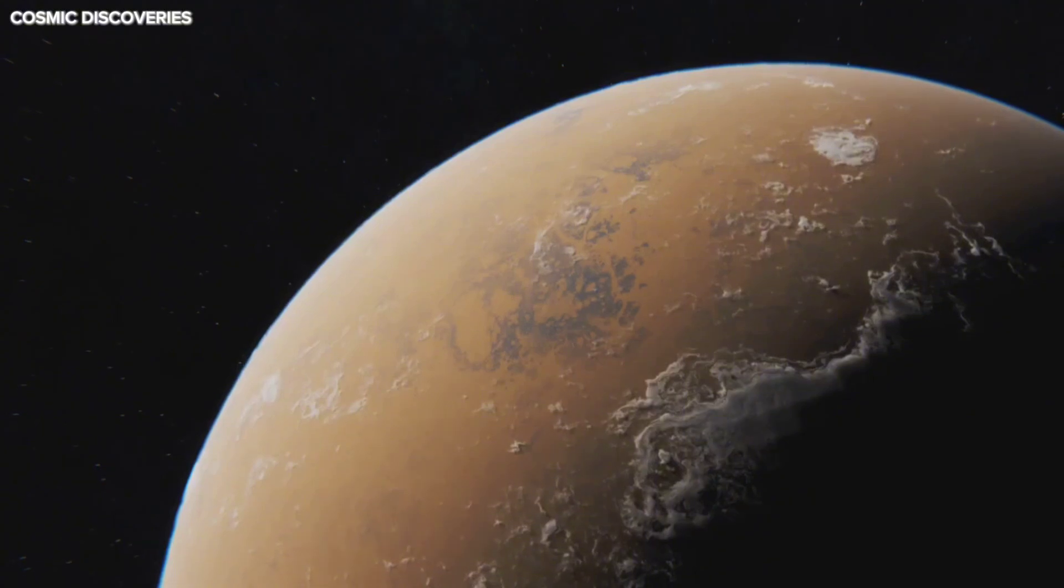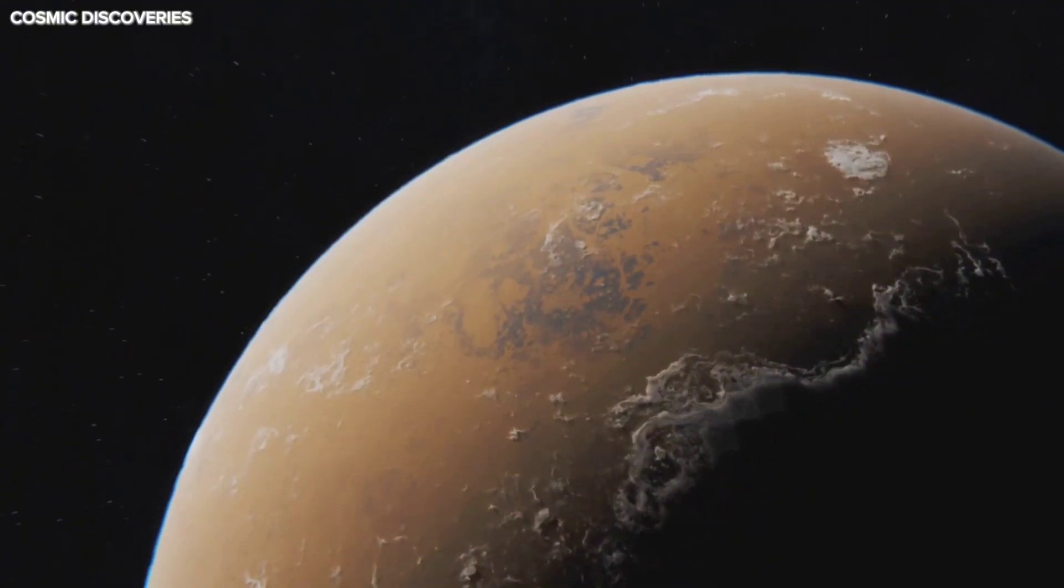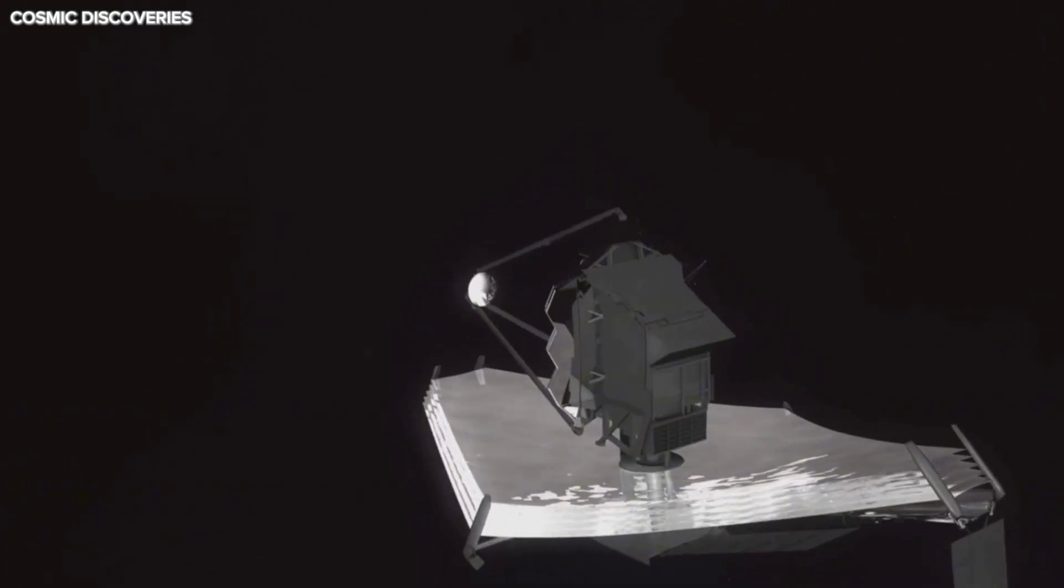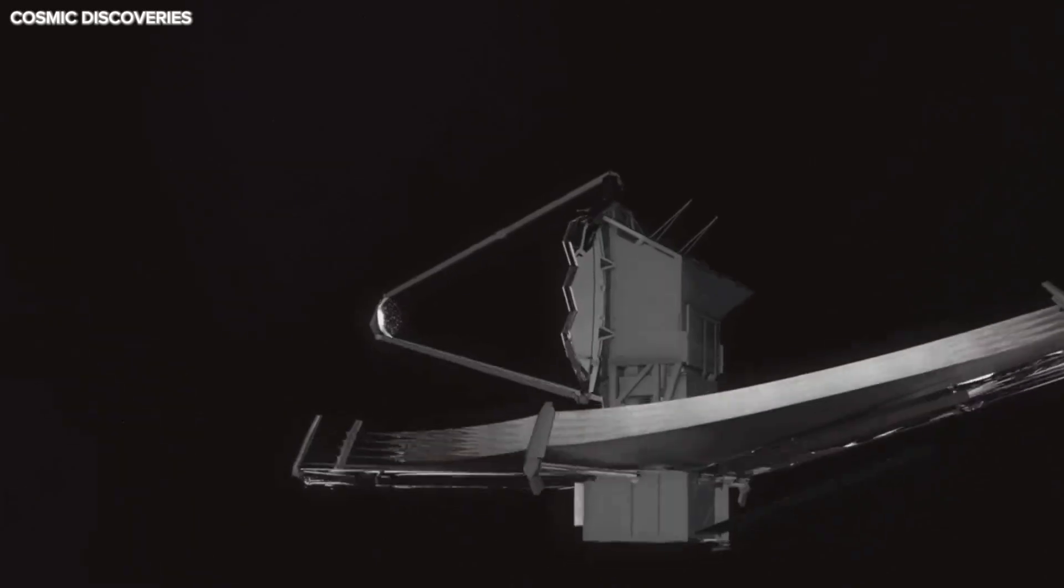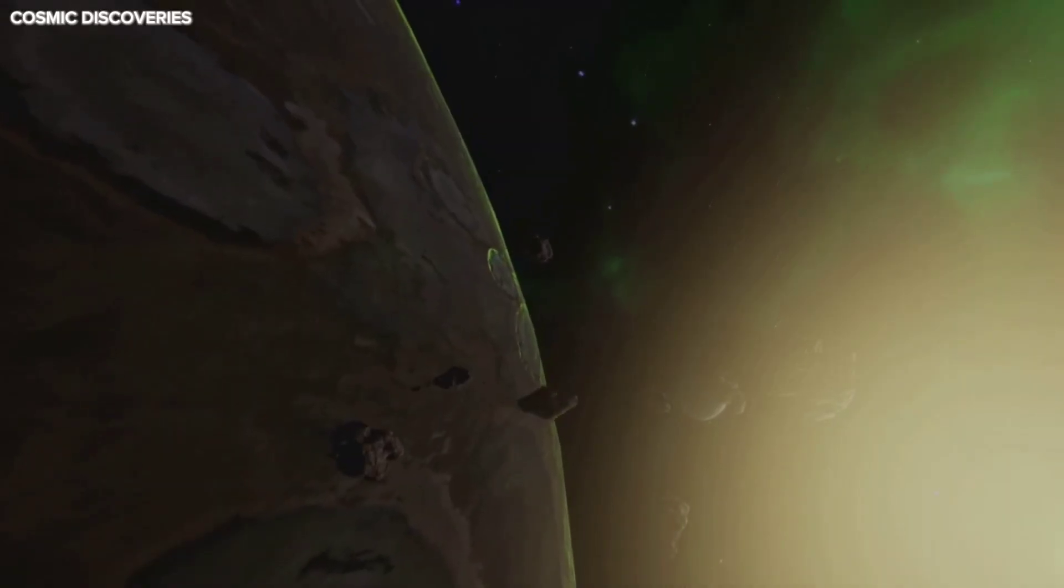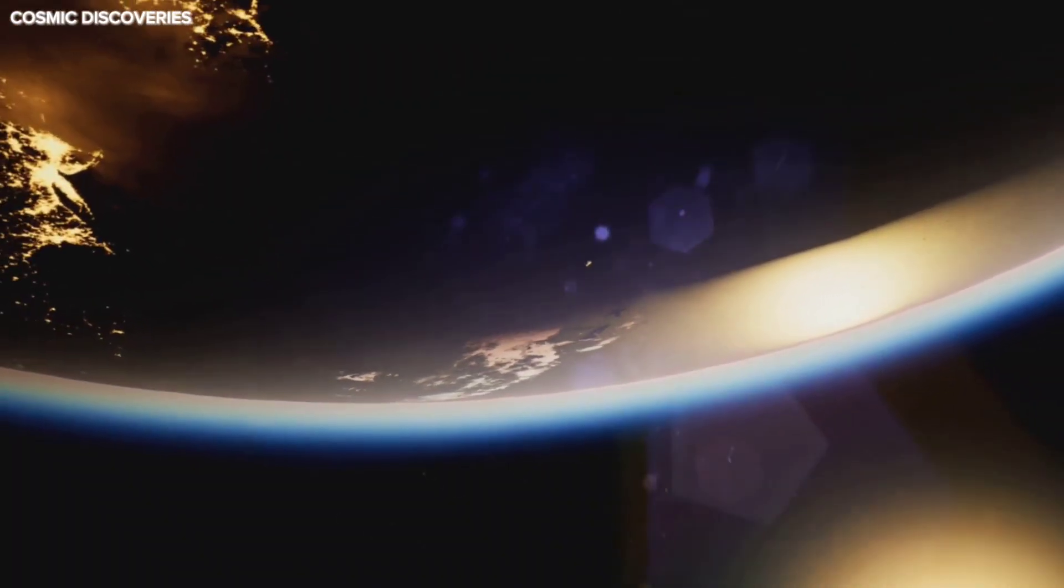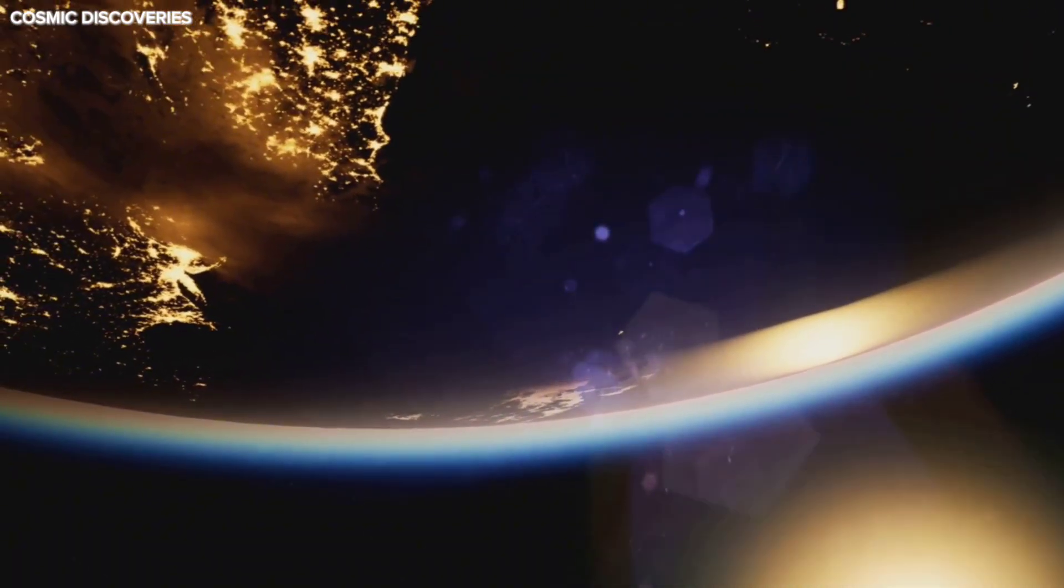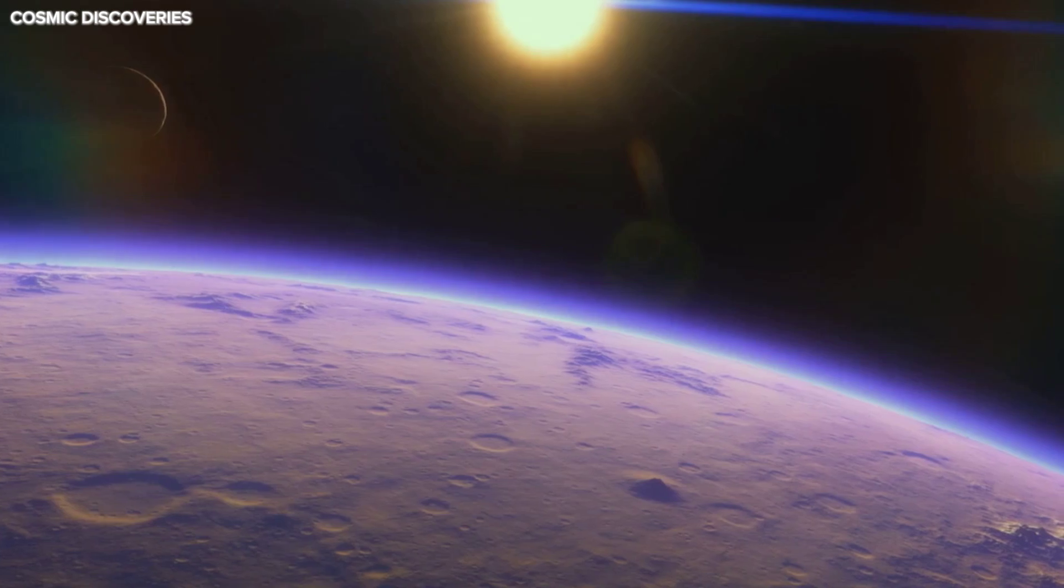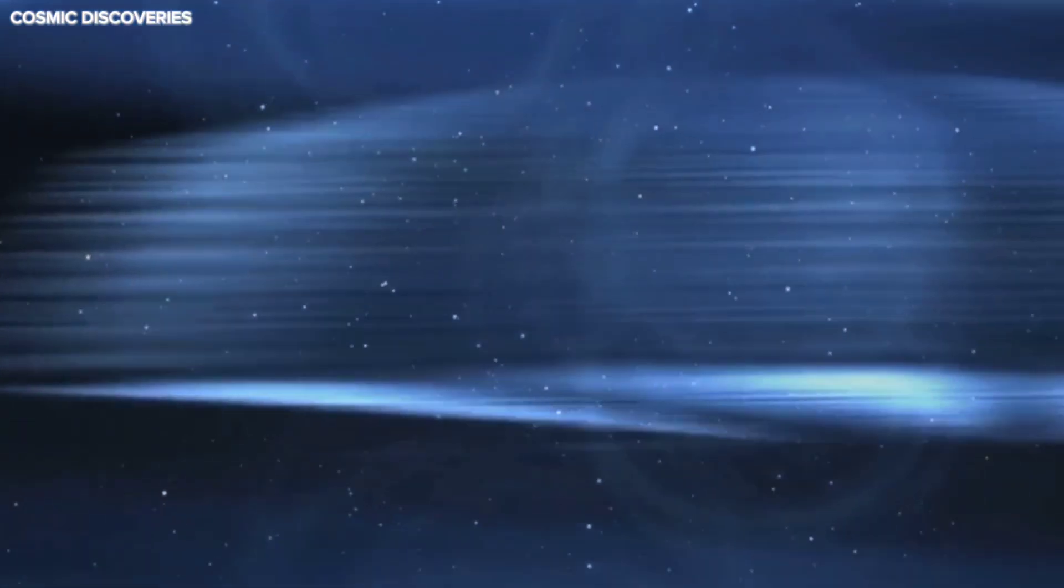Yet it's the permanent night side that makes the new discovery so tantalizing. JWST detected lights on the dark side, where no sunlight ever reaches. What could be producing light in eternal darkness? The Terminator zone between day and night might have moderate temperatures, perhaps a haven for life. And now, from these twilight lands and deep into the night, mysterious lights beckon us from across the void.